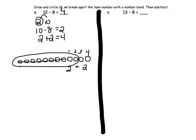In number 9, we will start with the teen number, 13, and we will create a number bond. 13 becomes a 10 and a 3, so we are not using the 13 any longer.